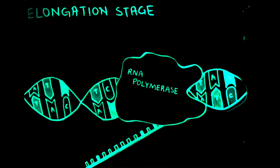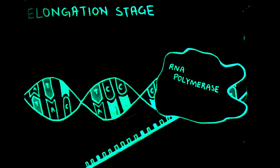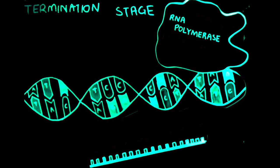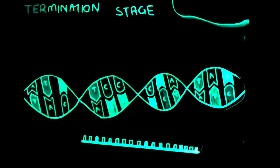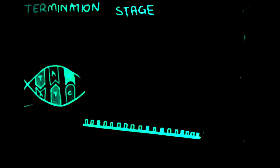When the RNA polymerase reaches the terminator codons, it stops and the creation of the mRNA is complete. However, before the mRNA can leave the nucleus to continue on to translation, it has to undergo some modifications.